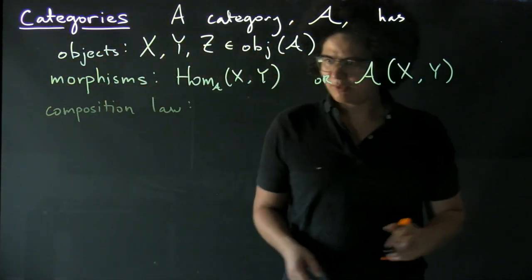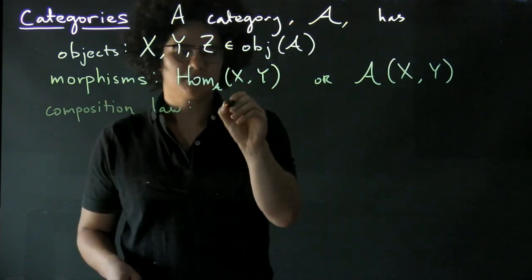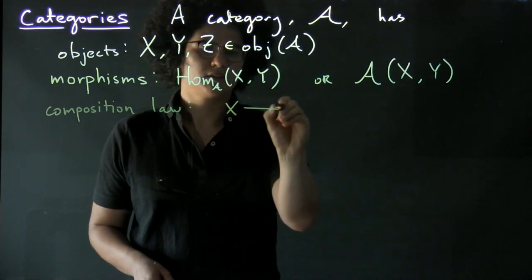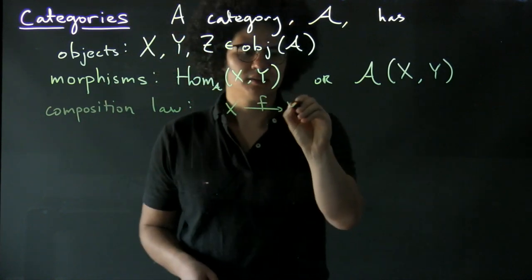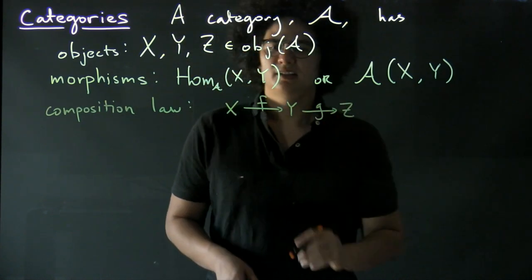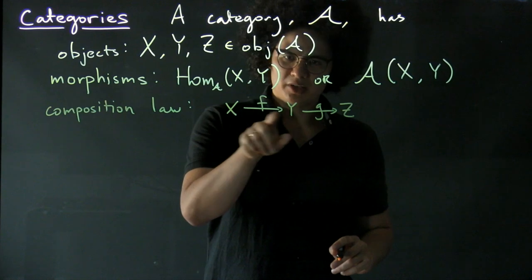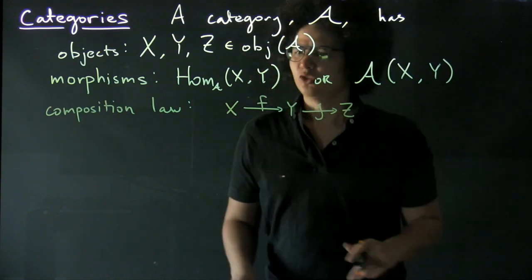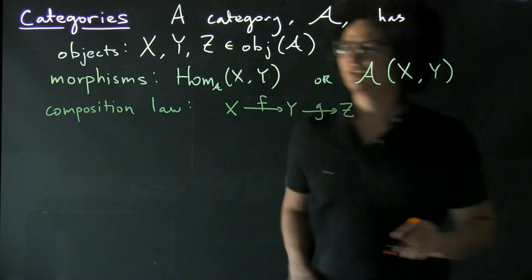So whenever you have two morphisms such that the codomain of one of them is the domain of the other, you need to be able to define a composition.